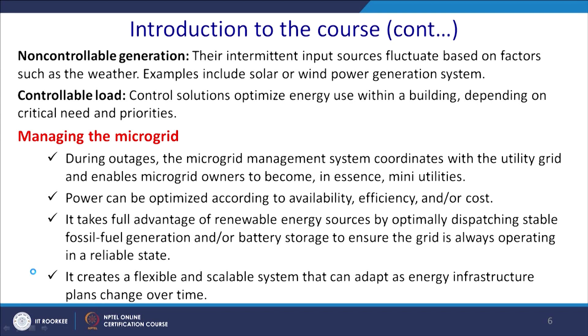There are a few critical entities in microgrid discussion. One is non-controllable generation. Solar power, for example, cannot be controlled the way thermal or hydro power can — where you can open a valve throttle or use a governor to control flow. Solar radiation is not controllable; you cannot change the control input from solar and get the power output as required. For this reason, we require a different approach.